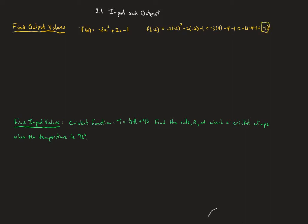Let's look at a more challenging question, still the same function, but now let's see what is f of x plus h. We are going to plug x plus h in for all of the x's and carefully follow the order of operations. So we have negative 3 times the quantity x plus h squared, plus 2 times x plus h, and then the minus 1.